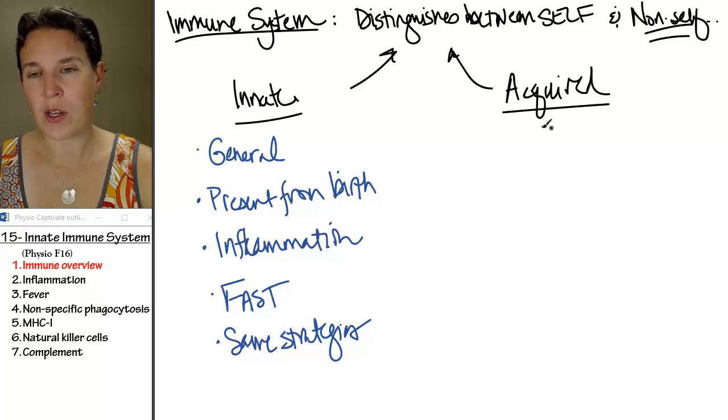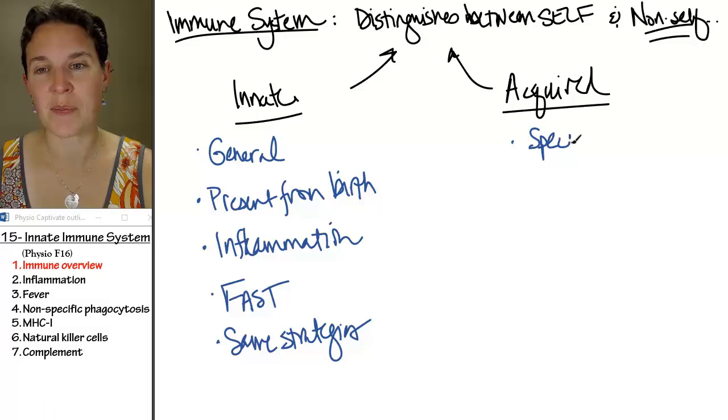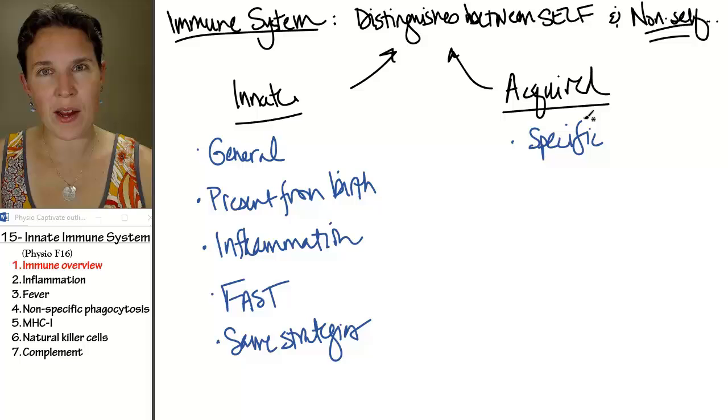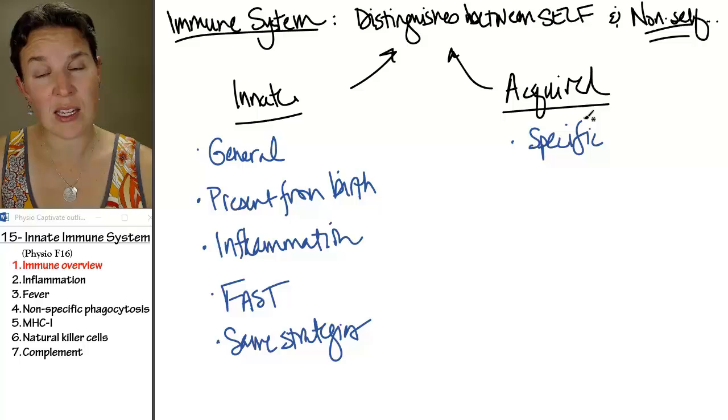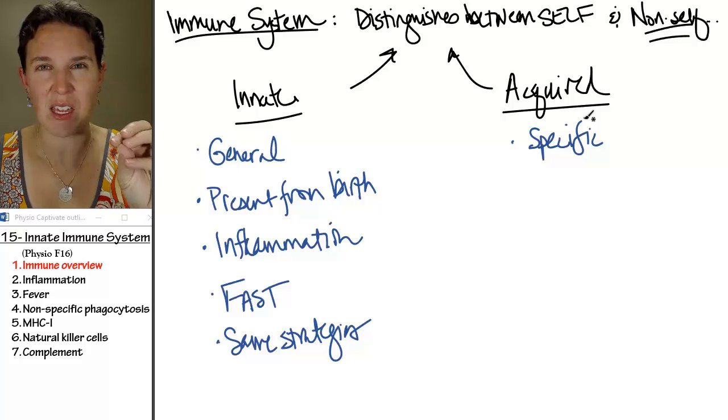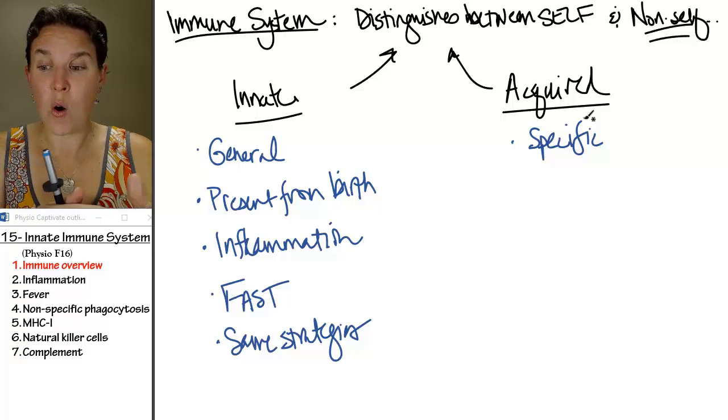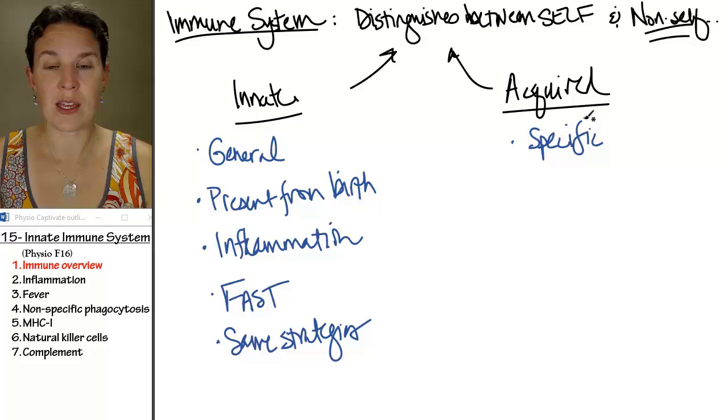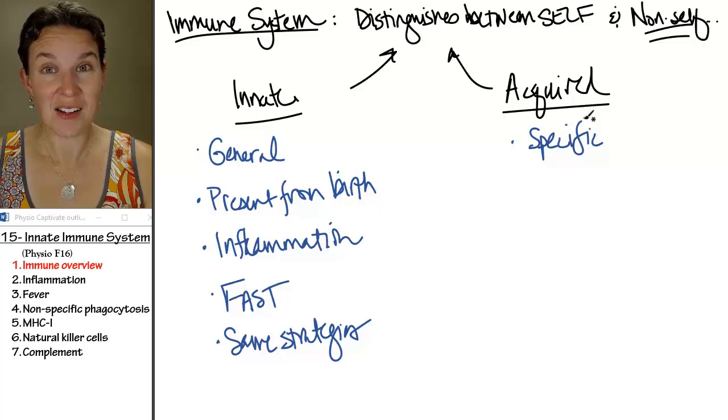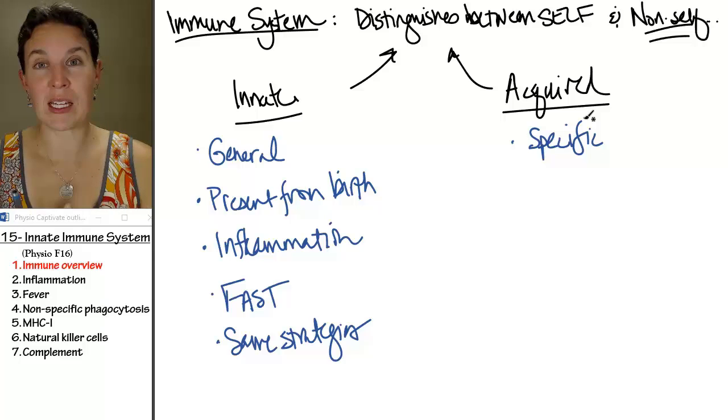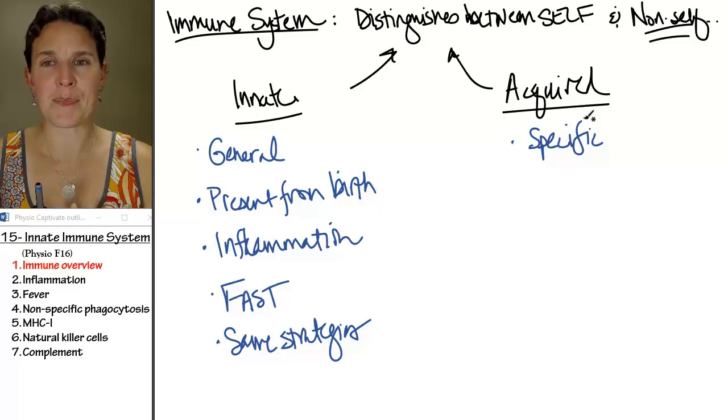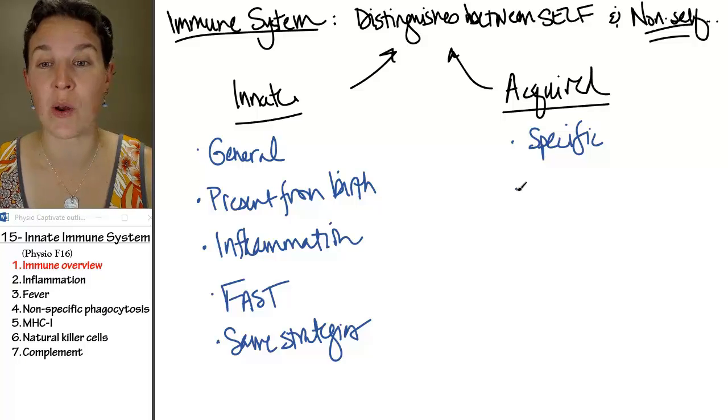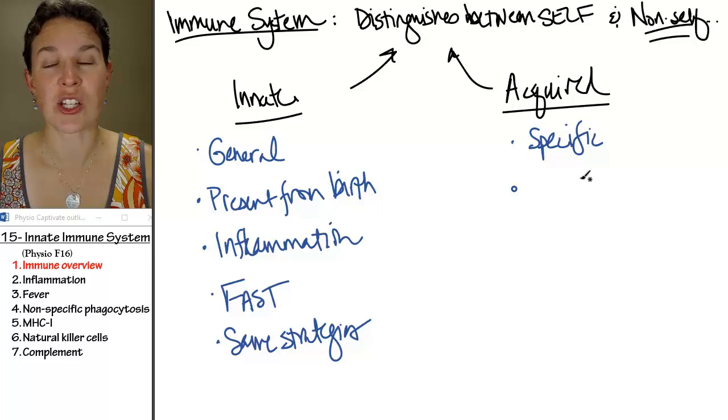The acquired immune response is very specific. In other words, we initiate an acquired immune response in response to a very specific invader. And we have a whole herd of possible invaders we can respond to, which is mind-blowing in and of itself. But you've got to wait for the specific guy to show up before we can launch the acquired response.